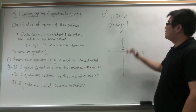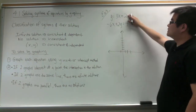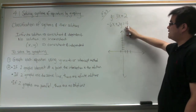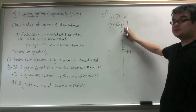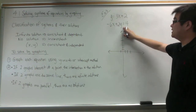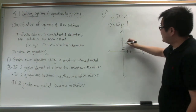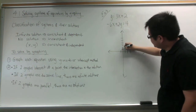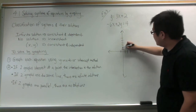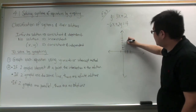In our next example, I am going to graph the first one using slope-intercept form. Some of you may like to use the intercepts to graph, so I will show you that with the second equation. For the first one, the y-intercept is 2, so we plot 2. We go up 3 and over 1.